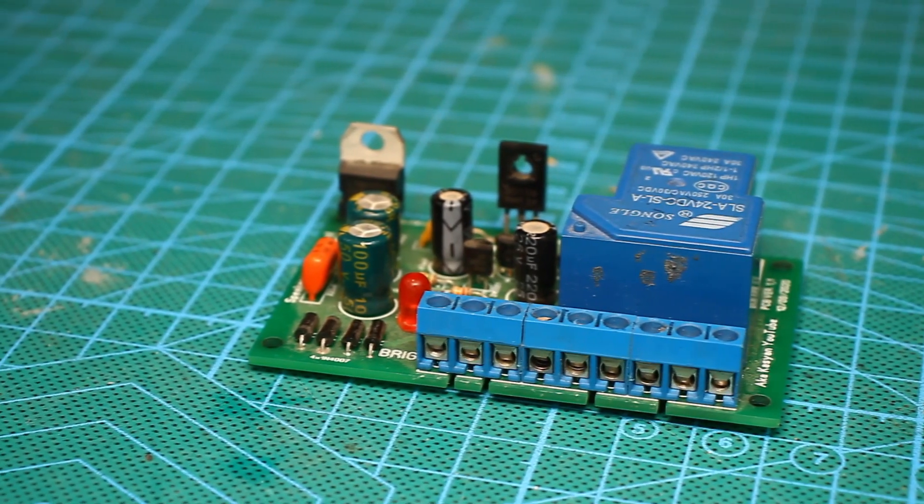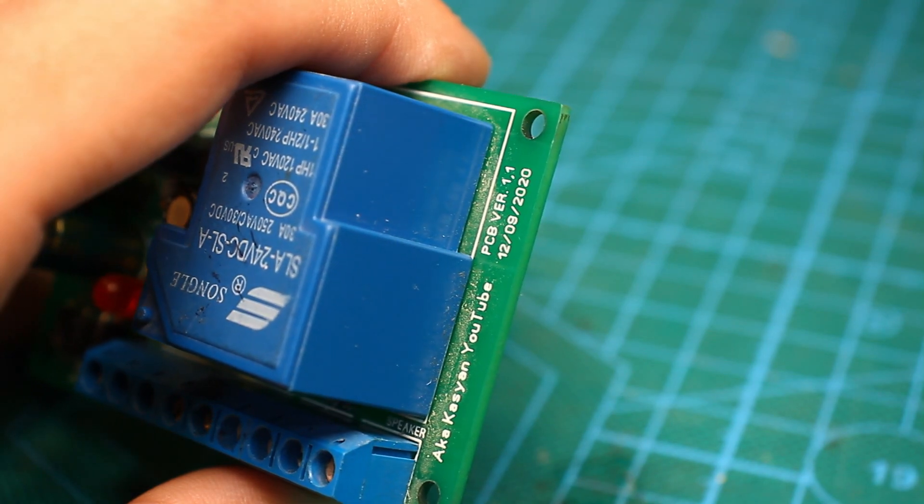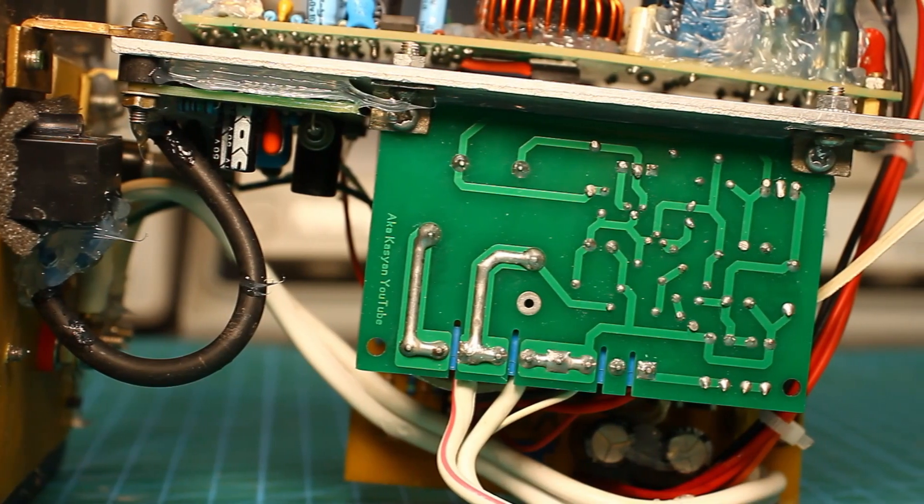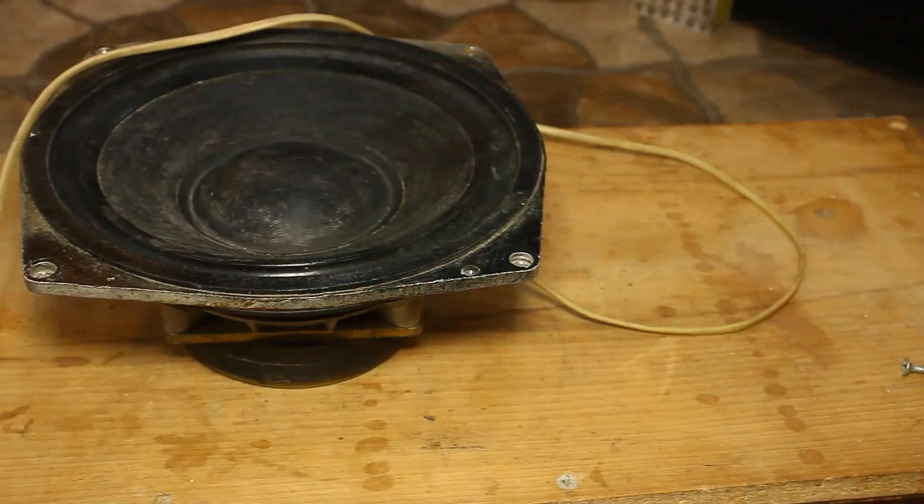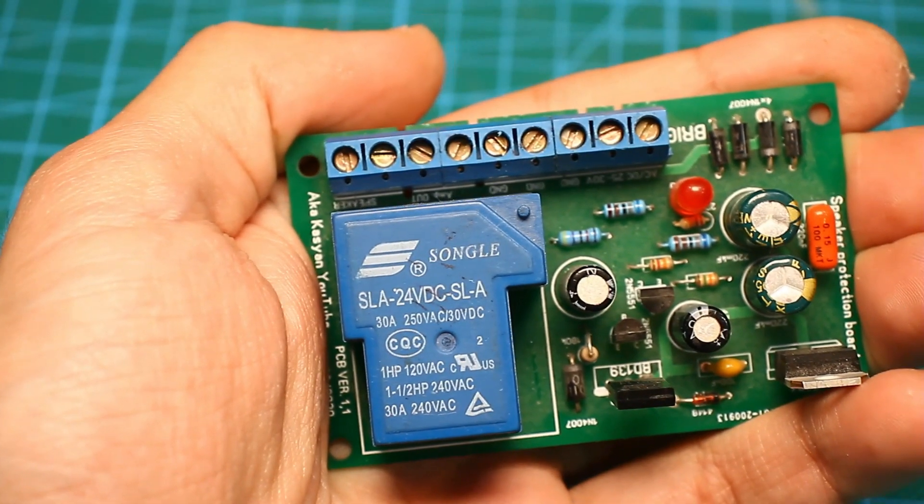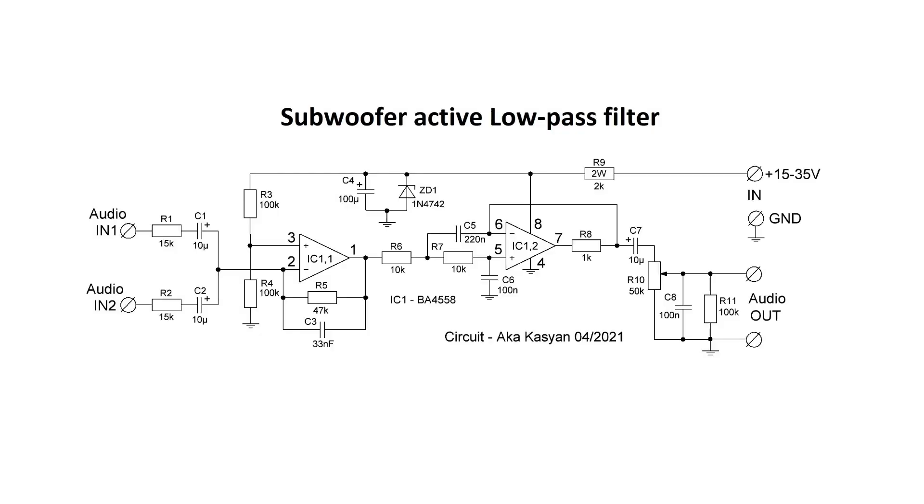The switching element is a relay with a 24 volt coil. When more than 1 to 1.2 volt of the DC voltage appears at the input of the protection unit, the circuit instantly reacts. As a result, the relay and acoustics in general are turned off. The protection unit is universal and can work with amplifiers of any class.